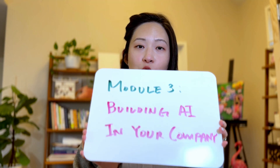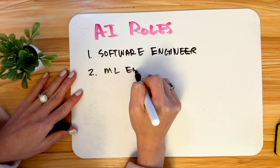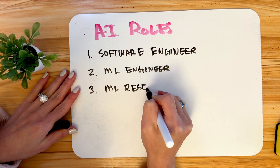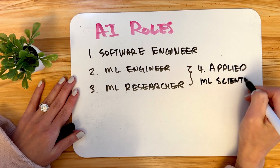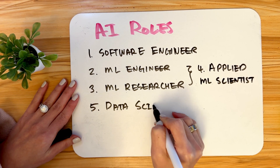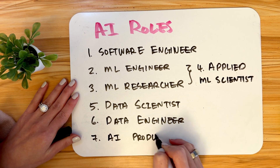In module three, we dive into how to build AI in your company as a group. AI teams are not just ML engineers and data scientists — there are many other roles involved. You need a software engineer to build infrastructure and user-facing applications, a machine learning engineer to train and optimize AI models, machine learning researchers to explore cutting-edge AI methods, and applied machine learning scientists who implement research into practical solutions. Data scientists analyze data for insights, data engineers manage and pre-process large datasets, and AI product managers define project goals and prioritize tasks. If you're starting a small project yourself, you can also handle all of these roles, because AI projects can be built by just one person.